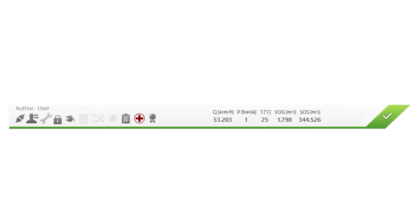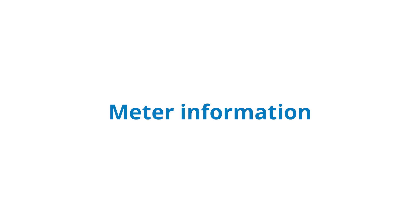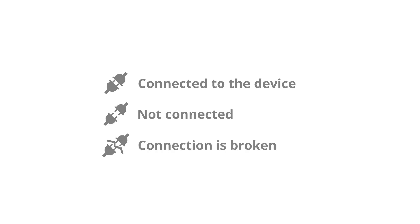Let's take a closer look at the device information bar at the top of the page. The device information bar gives you information about connection status, meter information, process values, and the current meter status. The connection status symbol shows whether the computer is connected to a compatible SICK device. The first icon indicates whether you are connected to the device, not connected, or your connection is broken.